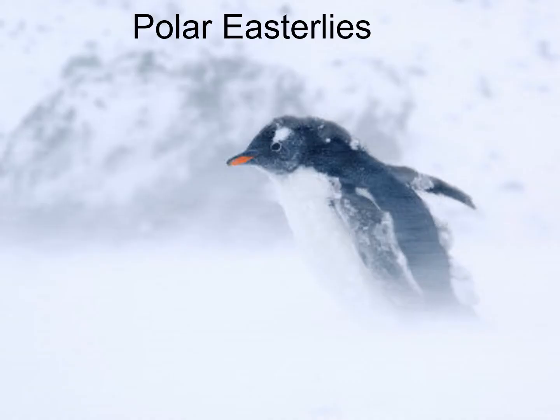The Polar Easterlies are that zone of winds located between the poles and about 60 degrees latitude — so 90 North to 60 North, and 90 South to 60 South. Here we see winds going around and around, with lots of Coriolis force at those latitudes, and the winds coming from the east.